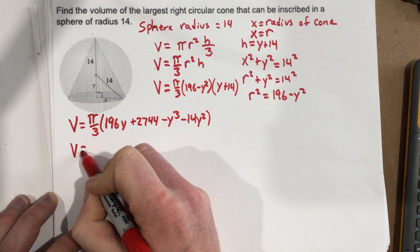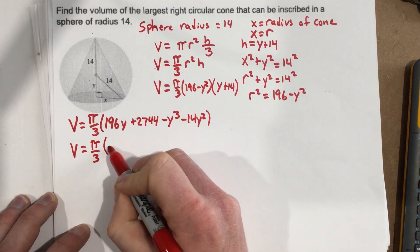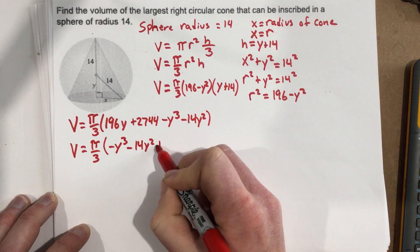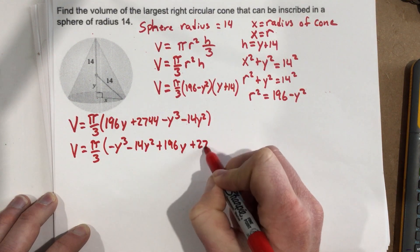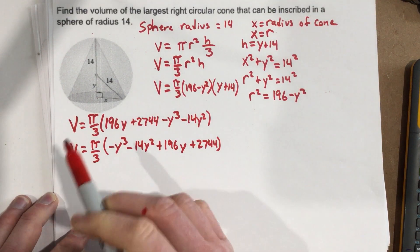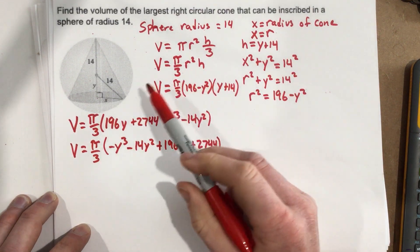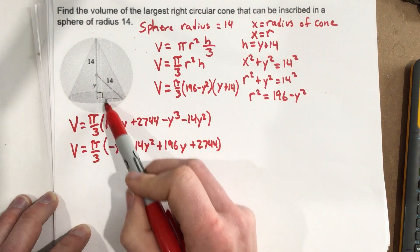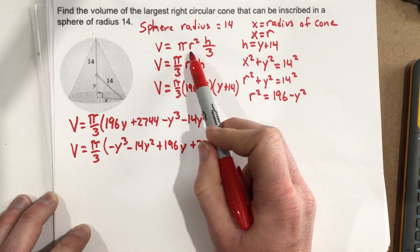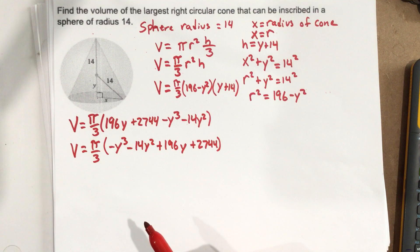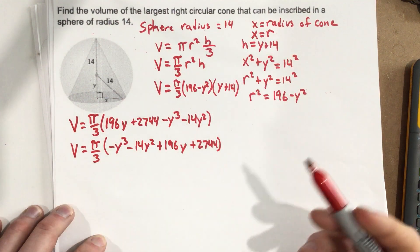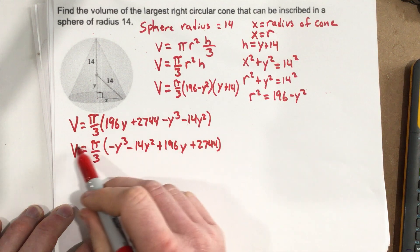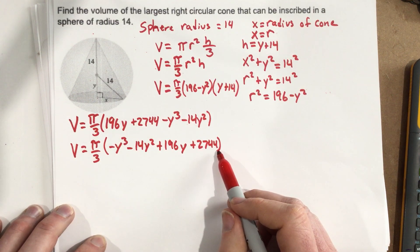Rearranging, the volume is V = (π/3)(−y³ − 14y² + 196y + 2,744). Now we need to find y to find the height and the radius x. To maximize volume, I take the derivative of this volume equation, set it equal to 0, and find the maximum.